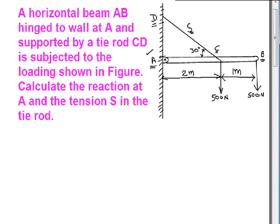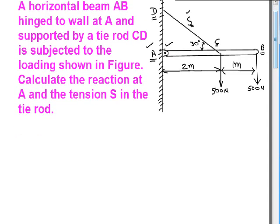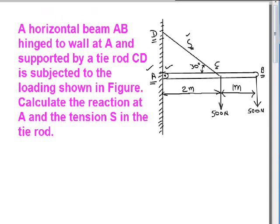We find the relevant object by noticing which object is touching the unknowns. The beam AB is touching S, which is one unknown, and beam AB is also touching the hinge at A, which is another unknown. So we will draw the free body diagram of beam AB.